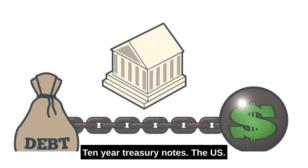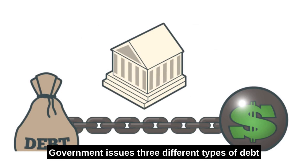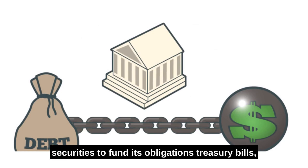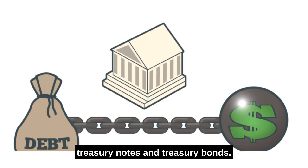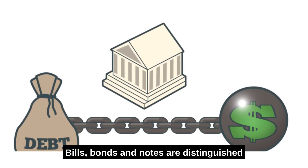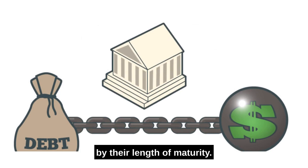Understanding 10-year Treasury Notes. The U.S. government issues three different types of debt securities to fund its obligations: Treasury bills, Treasury notes, and Treasury bonds. Bills, bonds, and notes are distinguished by their length of maturity.